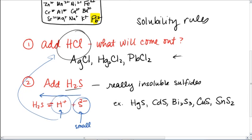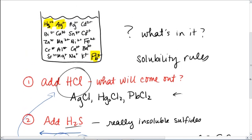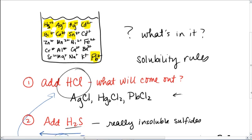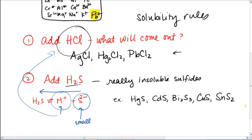So, if I go back up here to my original, we've got our mercury-2, our cadmium, our bismuth, our copper, and our tin would precipitate out on this next step. Again, we're not doing numbers here. Qualitative analysis is really our way of identifying what's in there.